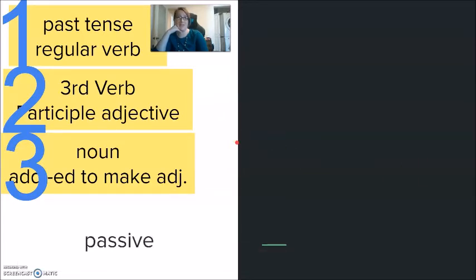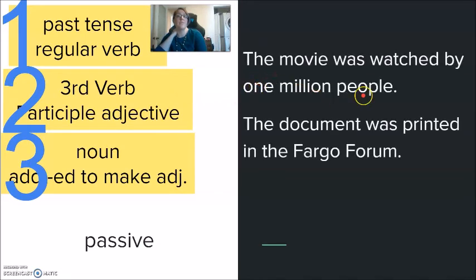The last way that we see the -ED is, of course, in the passive. Now this is a type of verb. So it's not too much different from number one. However, this is not past tense, always. Because we could make a passive for the future. We could make a passive for the past. We could make a passive with the present.